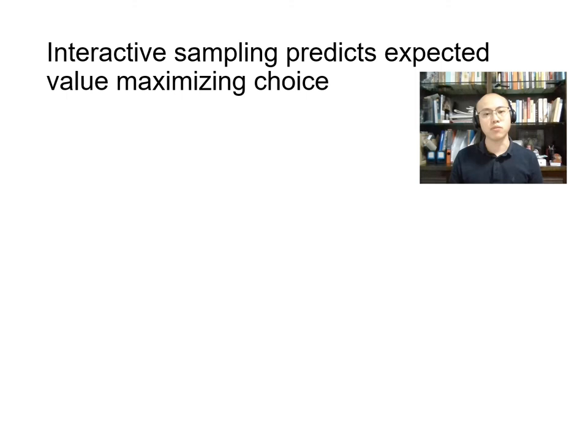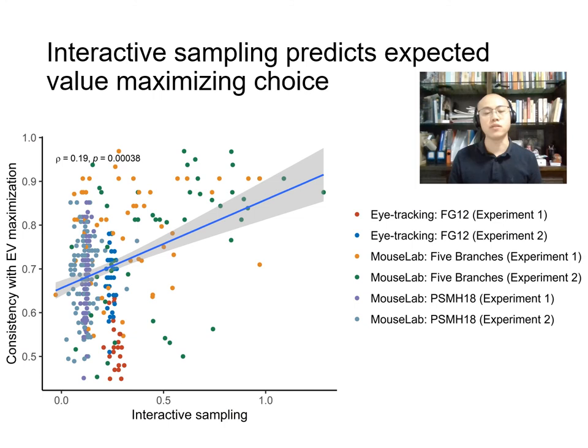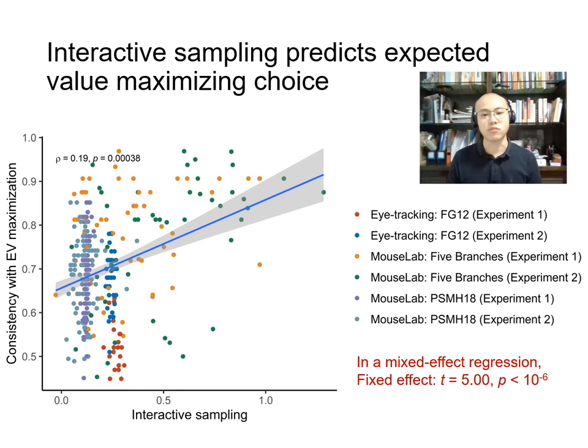Finally, according to the interactive sampling hypothesis, a stronger interactive sampling tendency should lead to more utility-maximizing choice behavior. We tested this using individual-level estimates of the interactive sampling parameter. On the x-axis is the individual-level interactive sampling parameter, and on the y-axis is consistency with expected value maximization. In the pooled analysis, we find a moderate correlation between the two, and in a mixed-effects regression accounting for systematic differences across experiments, the fixed effect is also significant.